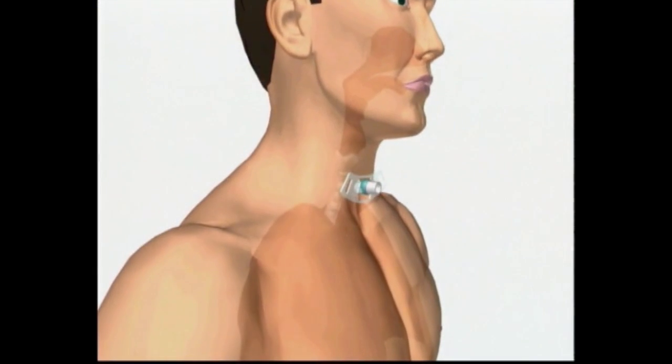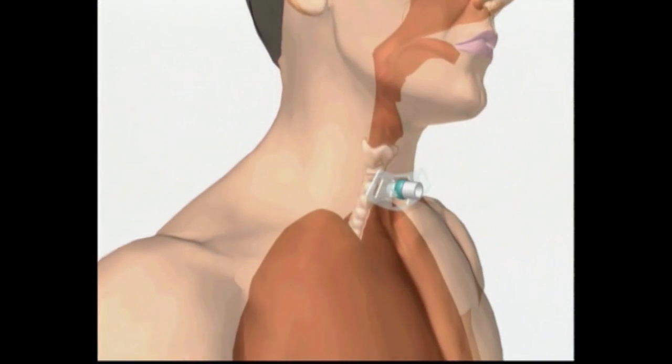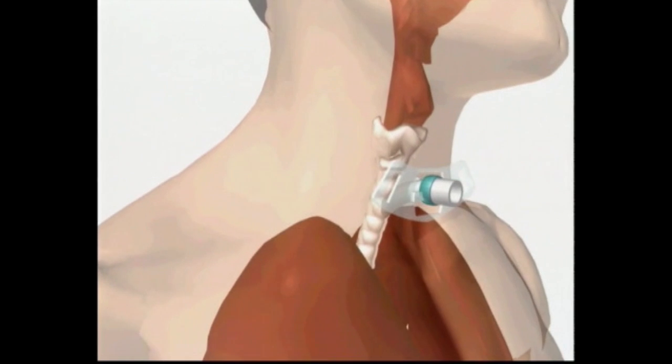A tracheostomy is created by forming an artificial opening into the anterior wall of the trachea to facilitate ventilation.